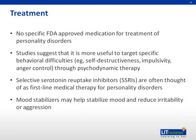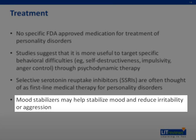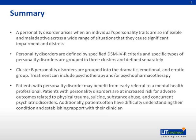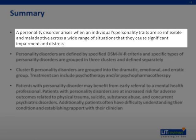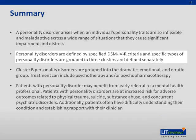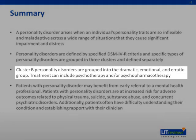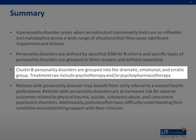In summary, a personality disorder arises when an individual's personality traits are so inflexible and maladaptive across a wide range of situations that they cause significant impairment and distress. Personality disorders are defined by specific DSM-IV criteria, and specific types of personality disorders are grouped in three clusters and defined separately. Cluster B characteristics are grouped into the appearing dramatic, emotional, erratic group. Treatment can include both therapy and pharmacotherapy. Patients with personality disorder may benefit from early referral to a mental health professional.